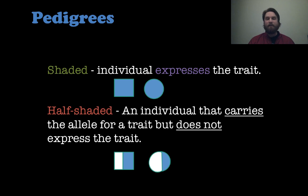If you have a square or circle that is half shaded, that means that individual is a carrier for the allele, but the trait is not expressed. So they have an allele, so say it was a recessive trait here, they may have a carrier, they may have one allele, but not both to express the trait.